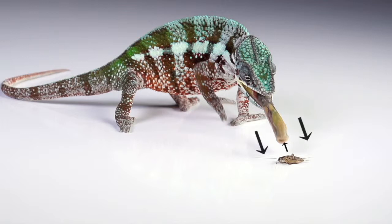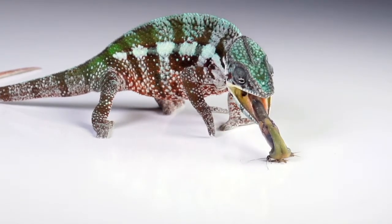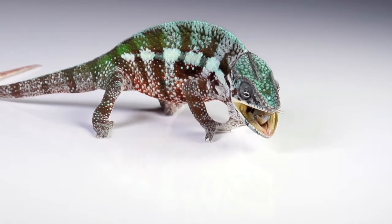However, the tongue's edges continue to move forward. This creates a suction cup which firmly encloses the insect and holds it. The prey sticks to the tongue and is pulled in like a fishing line.